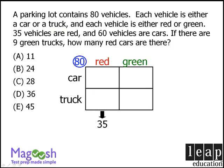If we have 80 vehicles altogether and 35 are red, we can conclude that the remaining 45 vehicles must be green. Some of those green vehicles are cars and some are trucks, but what we do know is that the sum of those two green boxes must be 45. Similarly, we are told that we have 60 cars. Some of those 60 cars are red and some are green, so we can't place them in individual boxes yet, but the sum of the two car boxes must be 60. Since we have 80 vehicles altogether and 60 are cars, the remaining 20 must be trucks, so the sum of the two truck boxes must be 20.